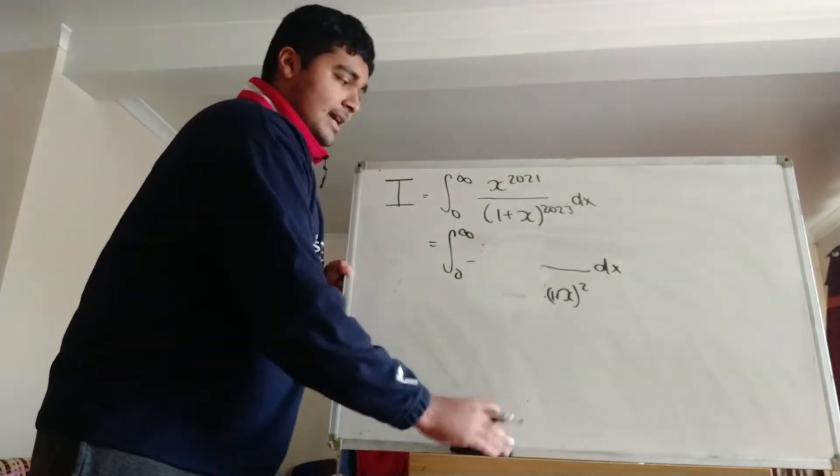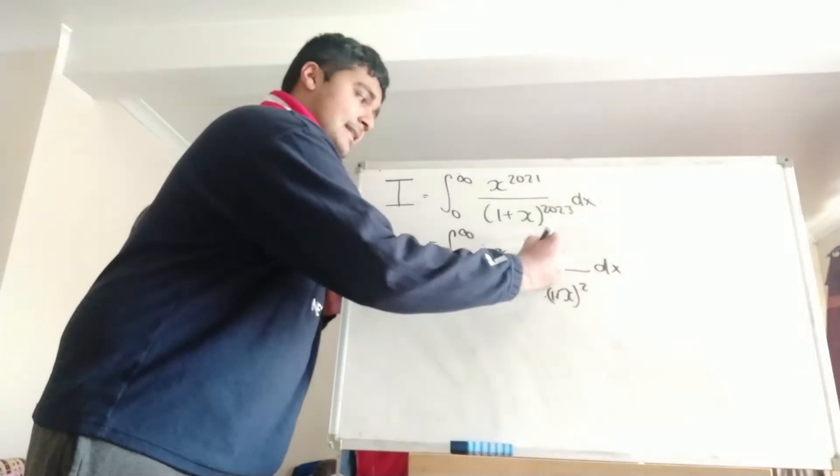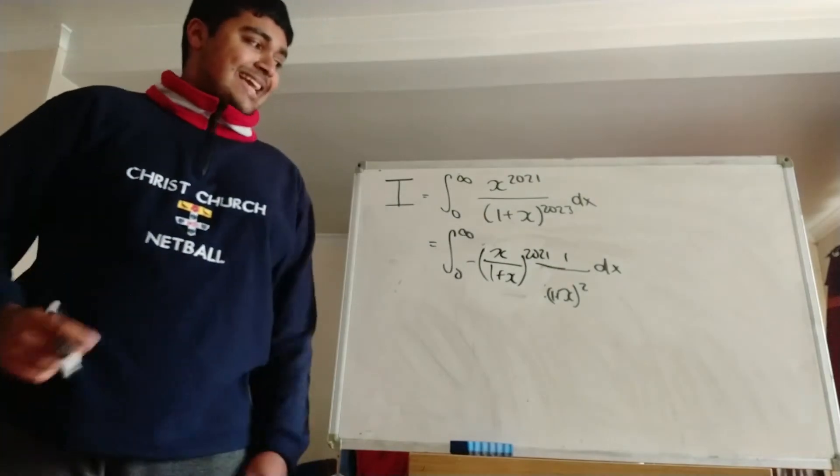So getting rid of this and writing this as x divided by 1 plus x, then raising that to the 2021, times 1 over 1 plus x squared dx.